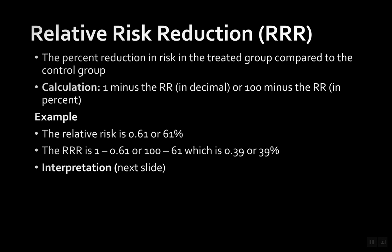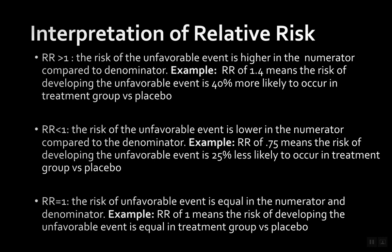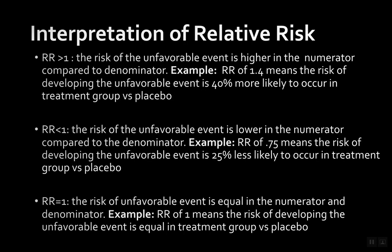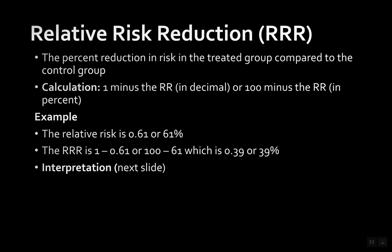Let's say the relative risk is 0.61, which is less than 1. Using the stroke example — treatment group versus placebo group — we calculated 0.61. Since the treatment group is on top, the stroke is more likely in the treatment group. So 1 minus 0.61 gives you 0.39, meaning the risk of developing a stroke is 39% less likely.